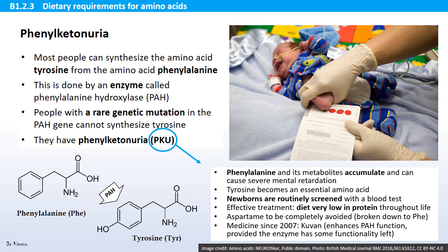Also, aspartame is to be completely avoided because aspartame is broken down to phenylalanine in the body. Aspartame is an artificial sweetener found in things like soda, candy, and diet foods. There is also a medicine which enhances the function of the enzyme PAH, but for this to work, the PAH enzyme needs to have some functionality left.